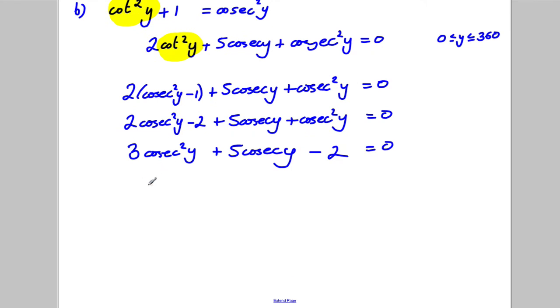Now we've got a quadratic we can factorise. Let's try 3 cosec y and a single cosec y. I'm forced into a positive 2 and a negative 1. That would work out. Therefore, cosec y on the one hand is a third and cosec y on the other hand is negative 2.